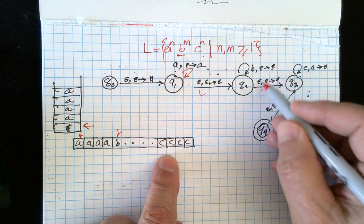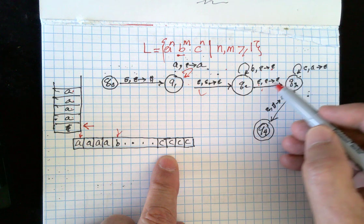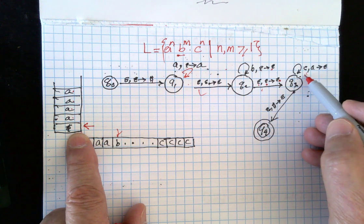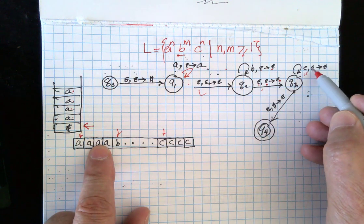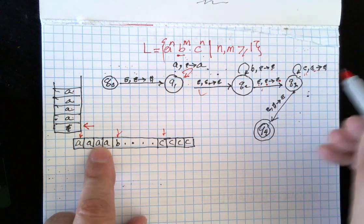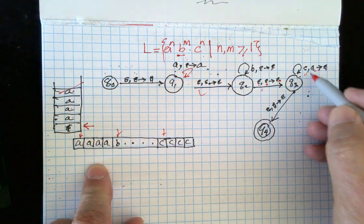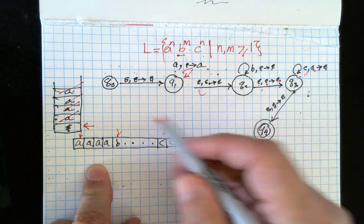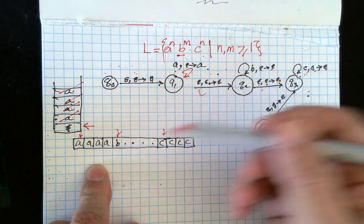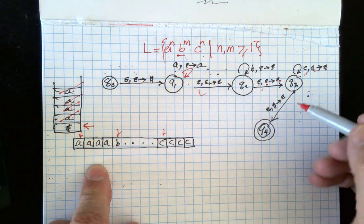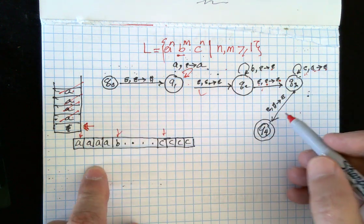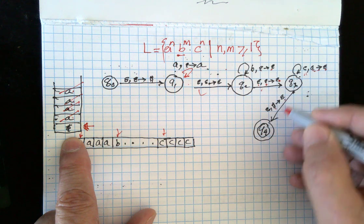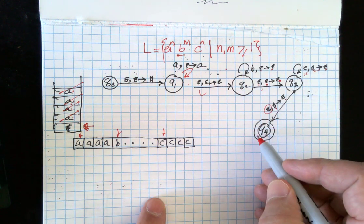After the B's, we move over another epsilon transition to the next state — not reading the tape, not popping or pushing anything, stack stays the same. Then when we read our first C, for every C we read we pop an A and push nothing. All the A's are gone because they match the number of C's. When we reach the dollar sign, we pop the dollar sign, push nothing, read nothing from the tape — and that's our final state.